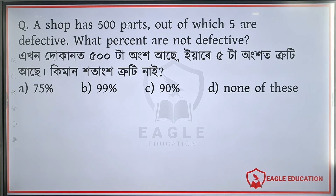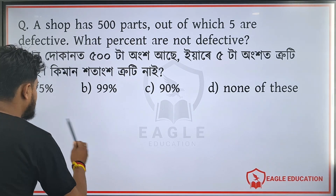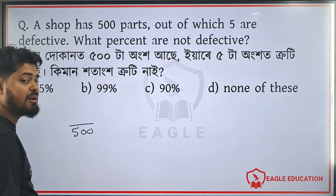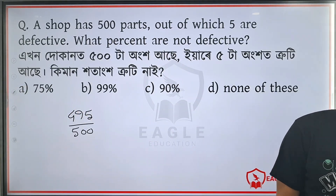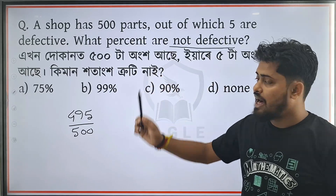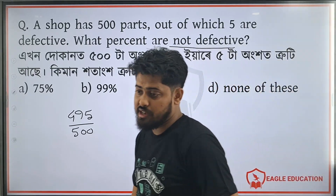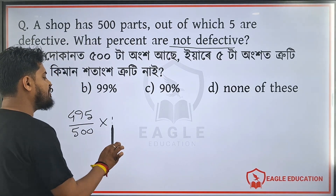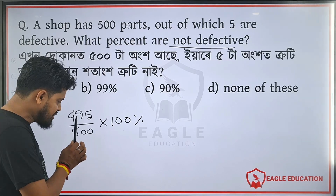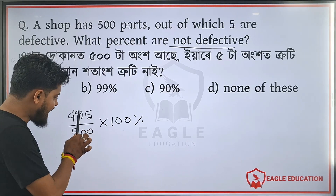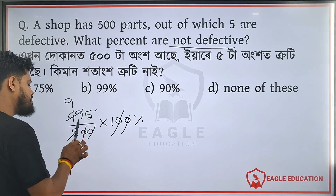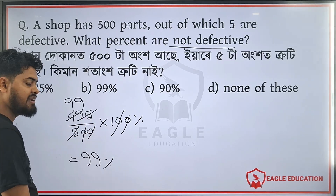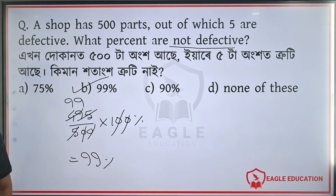This is a problem about defective pasta. How many percent is defective? The total pasta — the defective pasta means 2 times. We know that 99% policy applies. Option B is the correct answer.